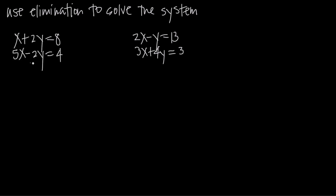We've been given two examples. Our first system of linear equations is x plus 2y equals 8 and 5x minus 2y equals 4. What we want to do is add these equations together or subtract them to eliminate a variable. In this case, it's pretty simple because we have a positive 2y in the first equation and a negative 2y in the second equation, so if we add these equations together, the positive 2y and negative 2y will cancel, leaving us with only the x's.